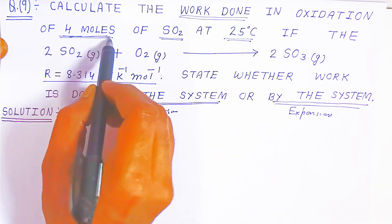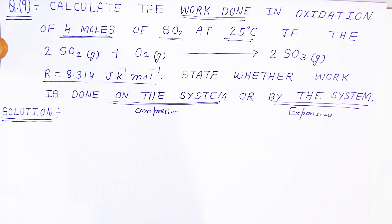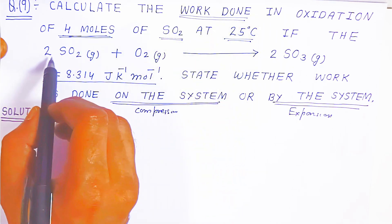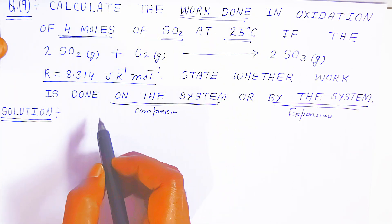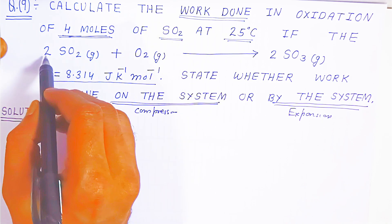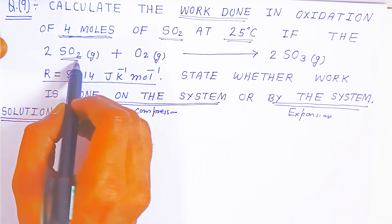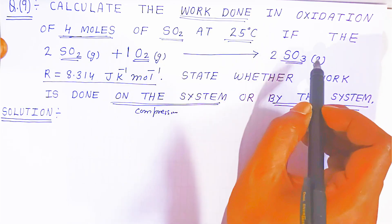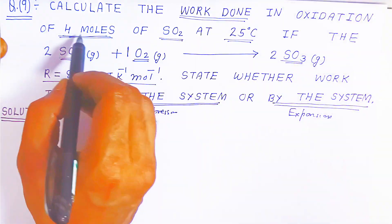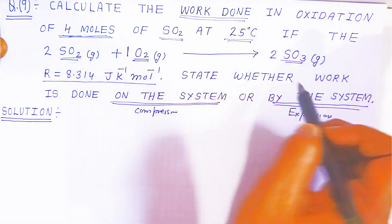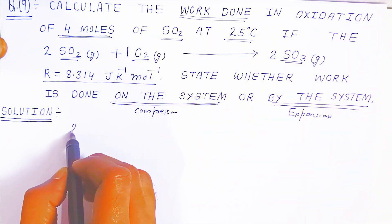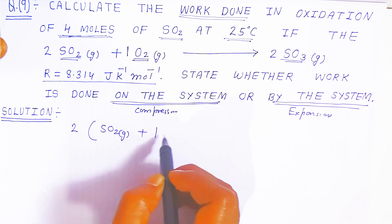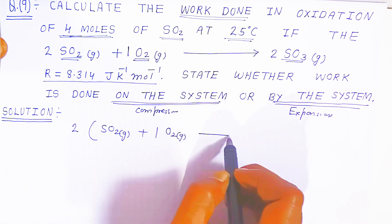The question asks about four moles of sulfur dioxide. The standard balanced equation has two moles of SO₂ gas combining with one mole of O₂, giving two moles of SO₃ gas. Since we need to oxidize four moles, we multiply the whole equation by two.